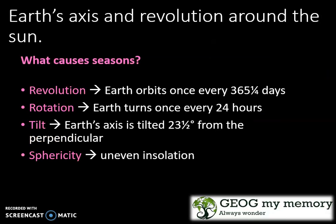Now let's look at the Earth's axis. The Earth's axis and revolution around the sun causes seasons. Revolution refers to the Earth orbiting once every 365 and a quarter days. Rotation refers to the Earth turning once every 24 hours. The tilt refers to the Earth's axis being tilted 23 and a half degrees from the perpendicular. The sphericity causes uneven insulation.